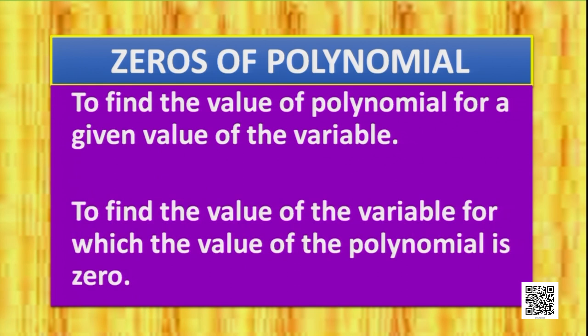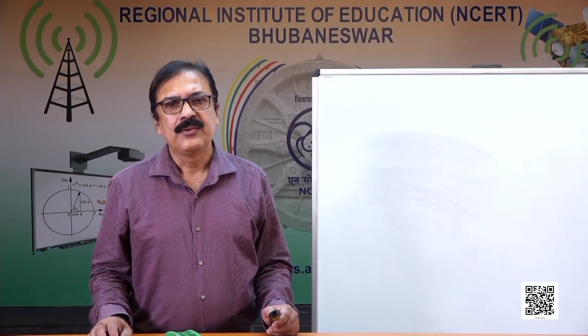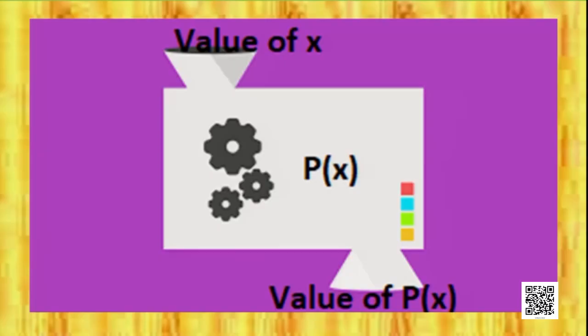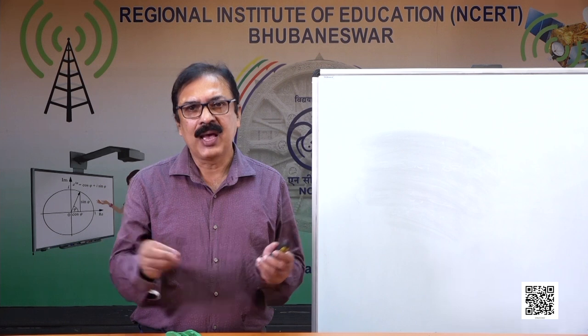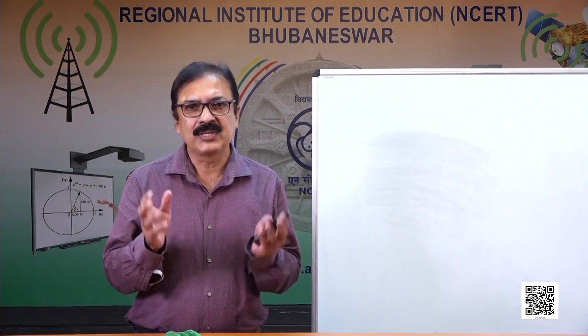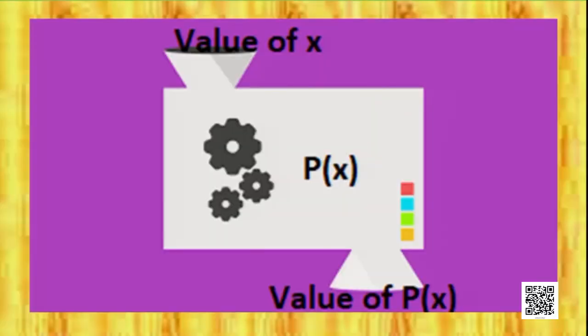Next, we need to find the value of the variable for which the value of the polynomial is 0. The evaluation of a polynomial is just like a machine — we put something in, some process goes on inside, and after that some output comes out. If we put the value of x, calculations are done in the polynomial, and we get a final value which is called the value of the polynomial P(x).